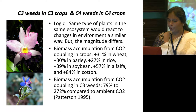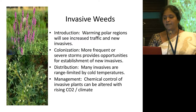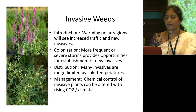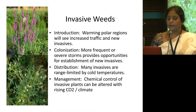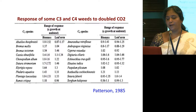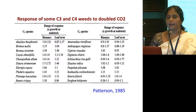Invasive weeds: warmer polar regions will see increased traffic and new invasive weeds. More frequent or severe storms provide opportunities for establishment of new invasive weeds. Many invasive weeds are range-limited by cold temperature, and because of increasing temperatures these weeds will spread to higher latitudes. Chemical control of invasive plants can be altered with rising CO2 or changing climate. A table shows how C3 and C4 weeds respond to doubling of CO2 — most C3 species will see biomass increase by 1 to 1.5 times with increased leaf area; C4 species show slightly less increase but still an increase.